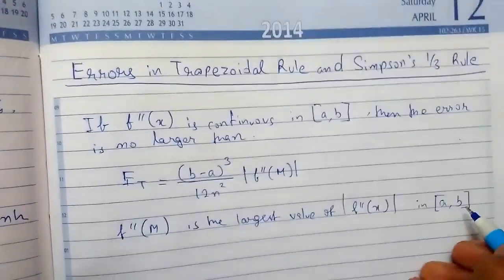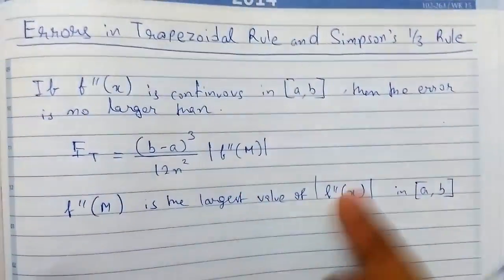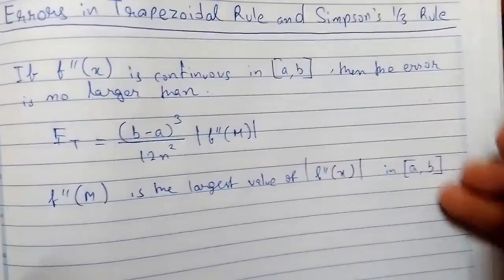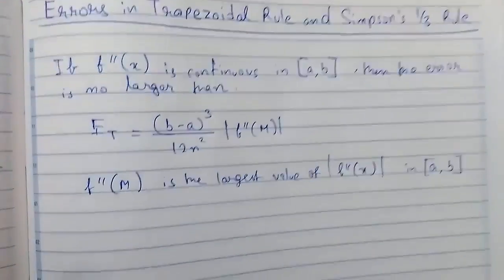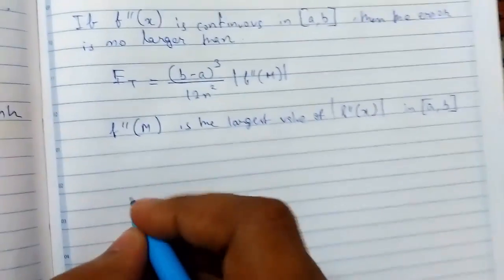First, you will find the derivative of f(x), then substitute the value of x for which the function will be maximum, the biggest value. This is how you calculate error for the trapezoidal rule. Next is Simpson's rule.